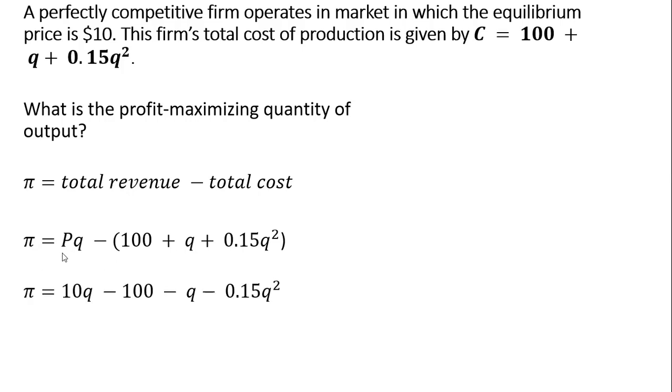Let's make a substitution. The price now, like we said, is $10 in this problem, and then I'm just going to distribute this minus sign, so minus 100, minus Q, minus 0.15Q squared.